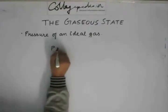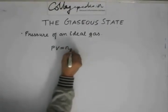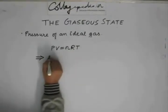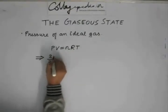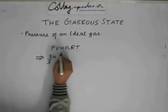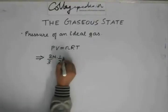We got PV equal to nRT and we can replace pressure with the expression we got, so this becomes 2 by 3n. The V in the denominator gets cancelled off and we are left with this.